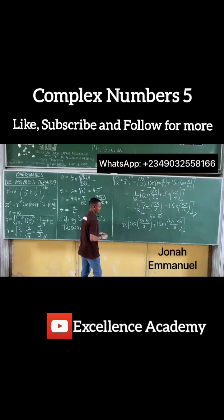So what do we have here? This would be equal to 1 over 32 into cos. Let's get 5 times 180, that's 900 over 2, that's 450. That's cos 450